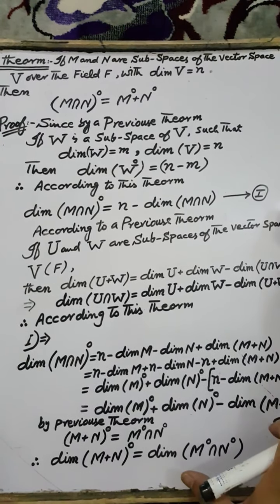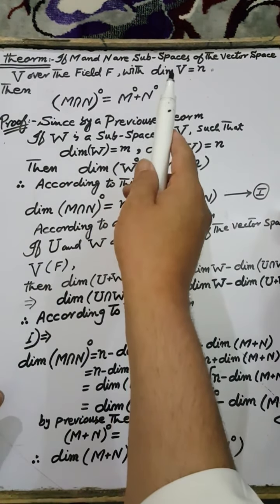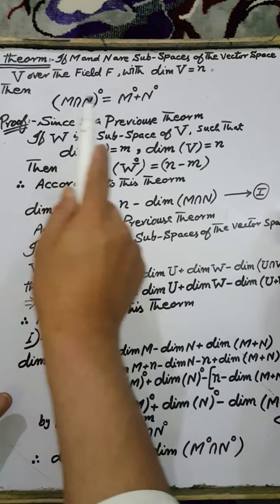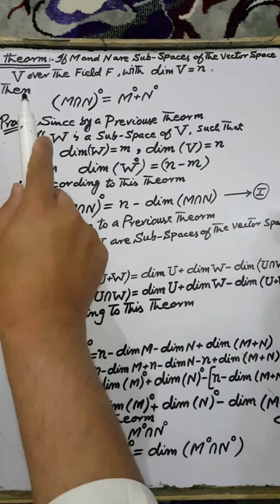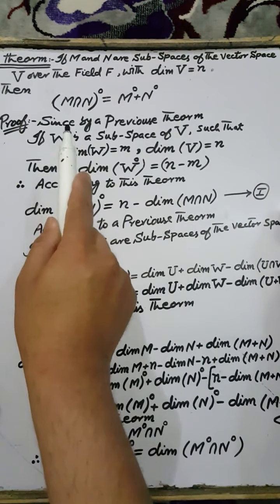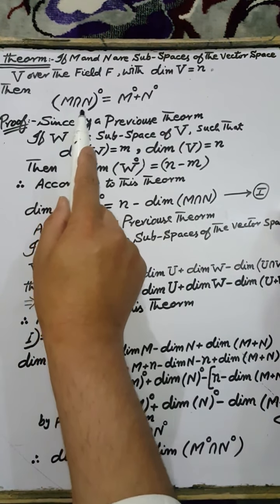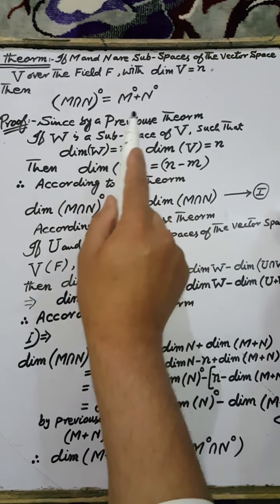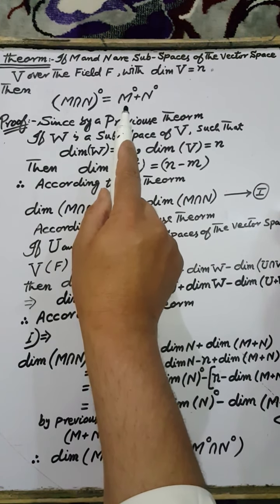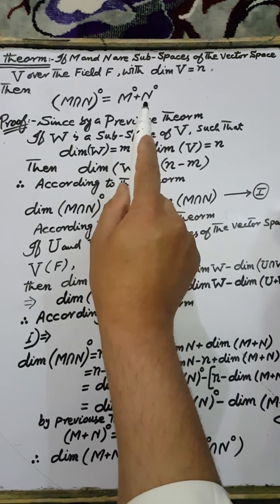Bismillah. Our next theorem: let M and N be subspaces of the vector space V over the field F, where the dimension of the vector space V is n. Then prove that the set of all annihilators of M intersection N is equal to the sum of the sets of all annihilators of M and the set of all annihilators of N.